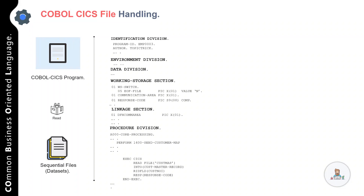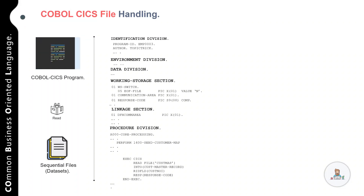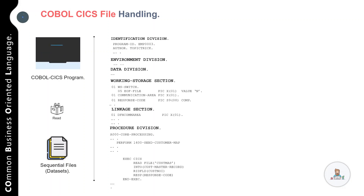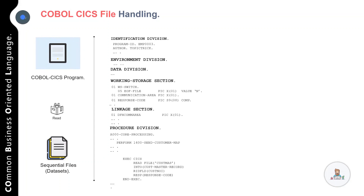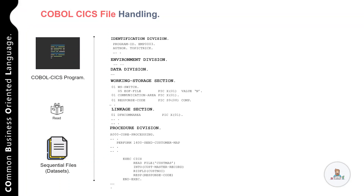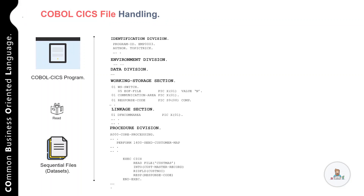The File Control Table keeps track of the characteristics of the file, so you do not have to code SELECT or FD statements in your COBOL program. However, if you are using the SORT statement in your COBOL CICS program, then you are required to specify the file details in the environment division and in the data division.